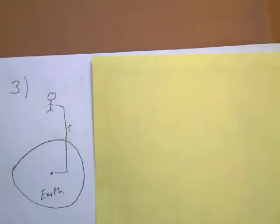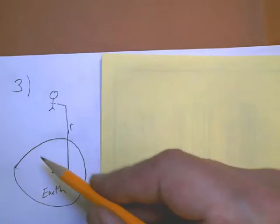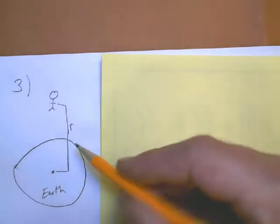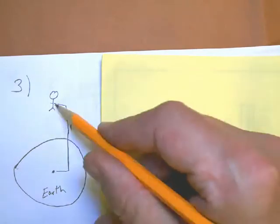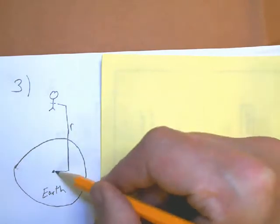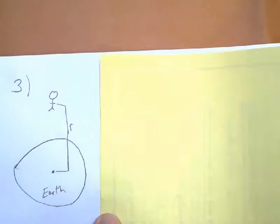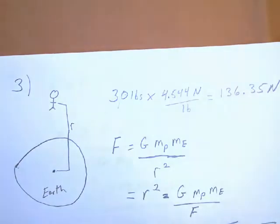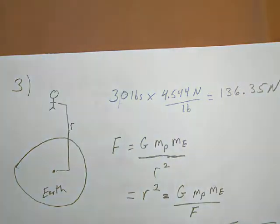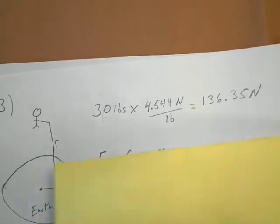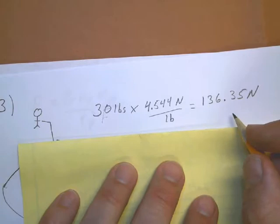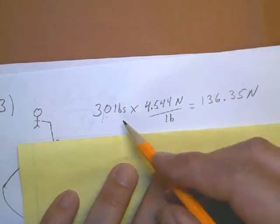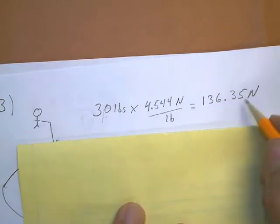Now, this is one of those where it really helps if you draw a diagram, like my lopsided earth here. You've got Pete the astronaut some distance above the surface of the earth, so you have a distance, or an R, between the center of the earth and Pete somewhere above the surface. It gives you his weight in pounds, so the first thing you need to do is convert that to Newtons, like I did here. The conversion factor was given on the front of the sheet, so the 30 pounds is equal to 136.35 Newtons.